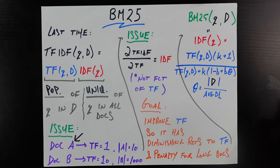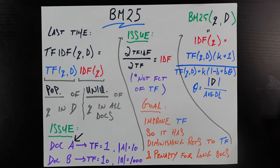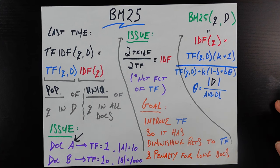But TF-IDF is not going to capture that. It's just going to blindly say document B contains the word 'cat' ten times, multiply it by ten, give it a higher score, and put that document higher in the list. So that's issue number one that we want to address with something better than TF-IDF.